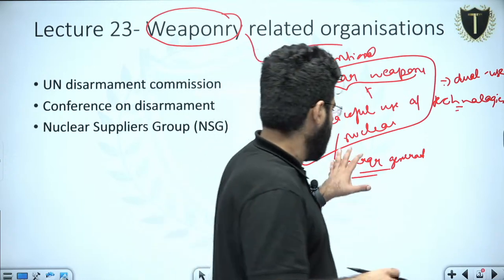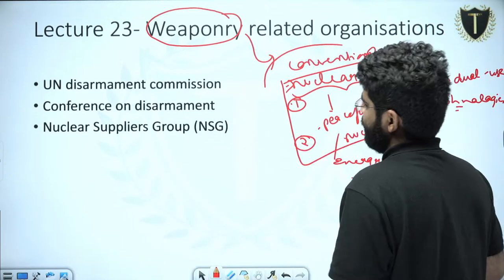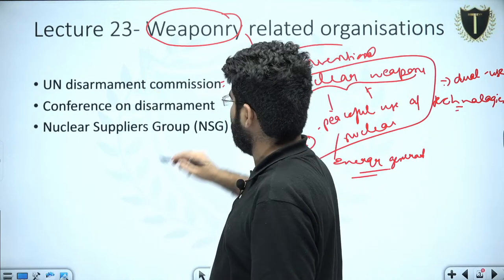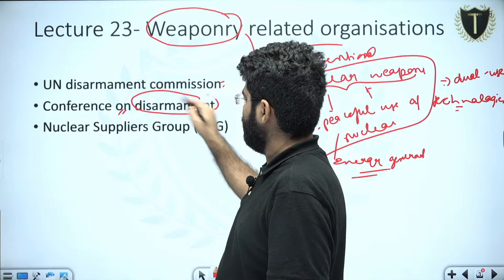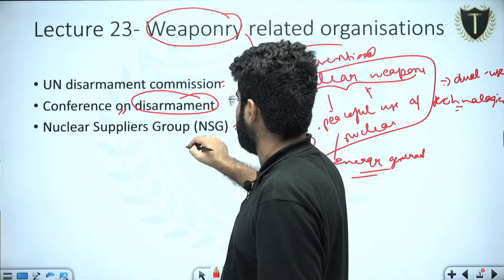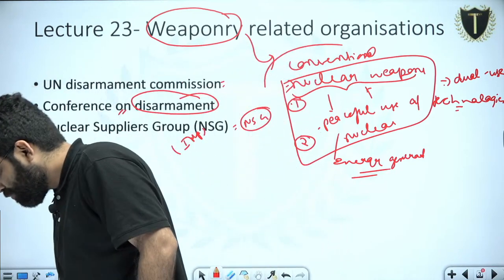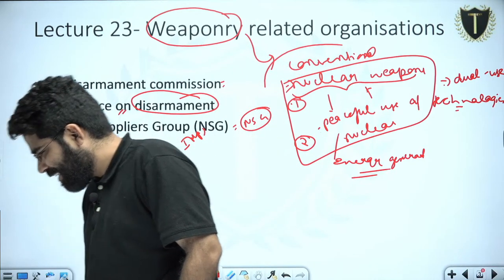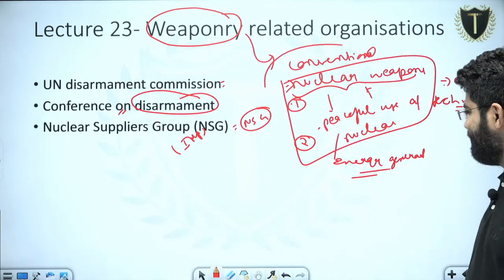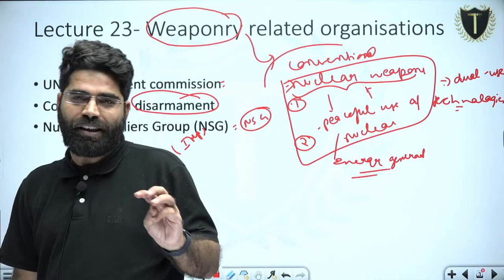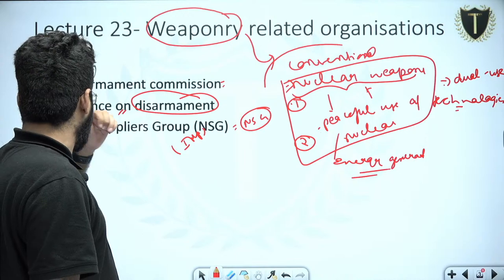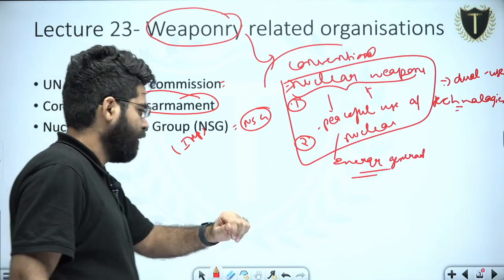In this lecture, we are going to discuss three bodies: the UN Disarmament Commission, then the Conference on Disarmament, and then the Nuclear Suppliers Group, or NSG. These are the three important bodies we will cover today.